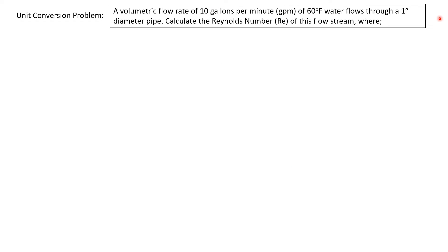Let's look at a simple unit conversion problem. We have a volumetric flow rate of 10 gallons per minute of 60 degree Fahrenheit water flowing through a one inch diameter pipe. We want to calculate the Reynolds number.